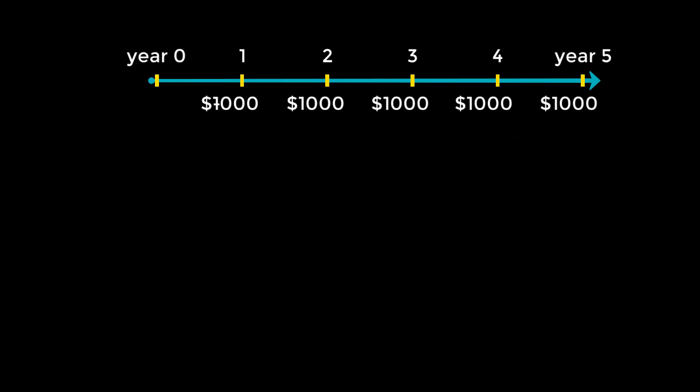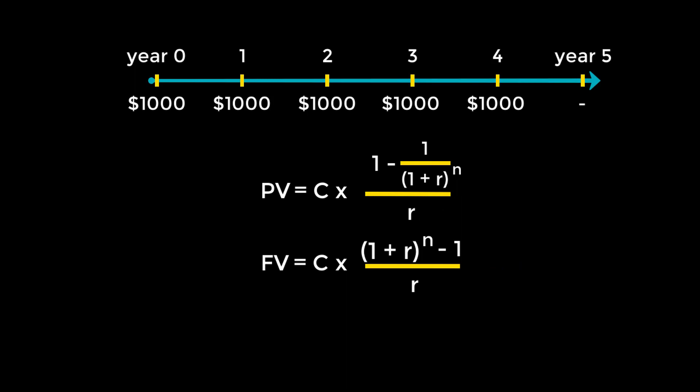Now we come to the topic of the annuity due. Solving for the present or future value of an annuity due uses the exact same formulas for an ordinary annuity, but with one extra step. Just multiply by (1 + R).